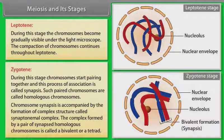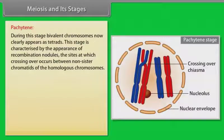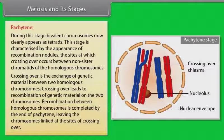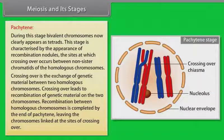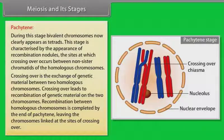The complex formed by a pair of synapsed homologous chromosomes is called a bivalent or a tetrad. These are more clearly visible at the next stage. Pachytene is comparatively longer than the previous two stages. During pachytene stage, bivalent chromosomes now clearly appear as tetrads. This stage is characterized by the appearance of recombination nodules, the sites at which crossing over occurs between non-sister chromatids of the homologous chromosomes. Crossing over is the exchange of genetic material between two homologous chromosomes. Crossing over leads to recombination of genetic material on the two chromosomes. Recombination between homologous chromosomes is completed by the end of pachytene, leaving the chromosomes linked at the sites of crossing over.